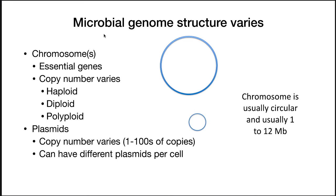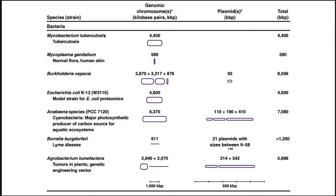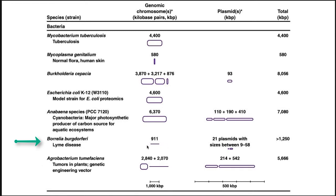For bacteria, the chromosome is usually circular and usually about 1 to 12 megabase pairs, but there are always exceptions. Mycobacterium tuberculosis has a single plasmid. Agrobacterium tumefaciens has a circular chromosome, a linear chromosome, and two circular plasmids. Borrelia burgdorferi has a linear chromosome and 21 plasmids. What I want you to get from these examples is that genomes can vary widely depending on the organism — you do not need to memorize these specific examples.